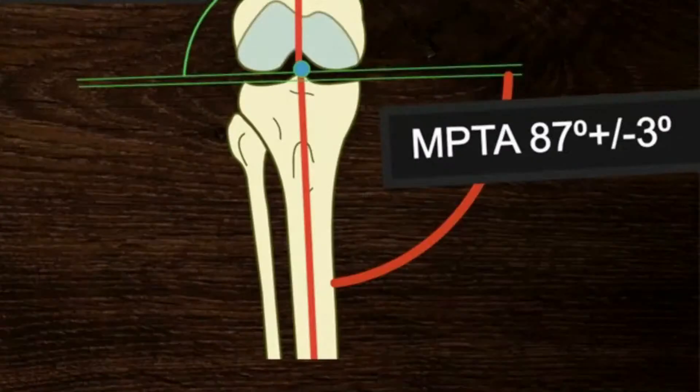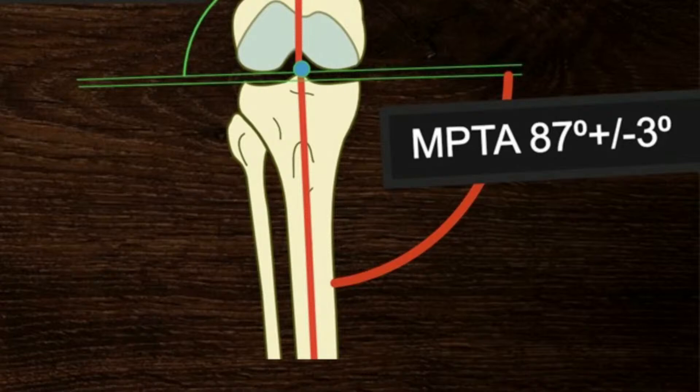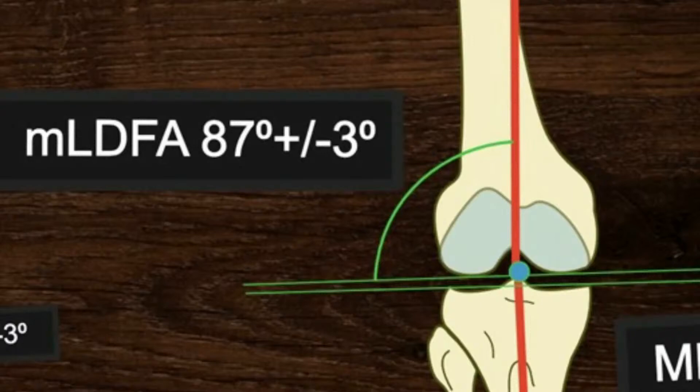The MPTA is the angle formed by the mechanical axis of the tibia with the tangential line to the tibial articular surface. Its normal value is 87 degrees with a deviation of 3 degrees; any decrease indicates the origin of varus is from the tibia. The LDFA is the angle formed by the mechanical axis of the femur with the tangential line to the distal femoral articular surface, also normally 87 degrees; any increase indicates the origin of varus is from the femur.